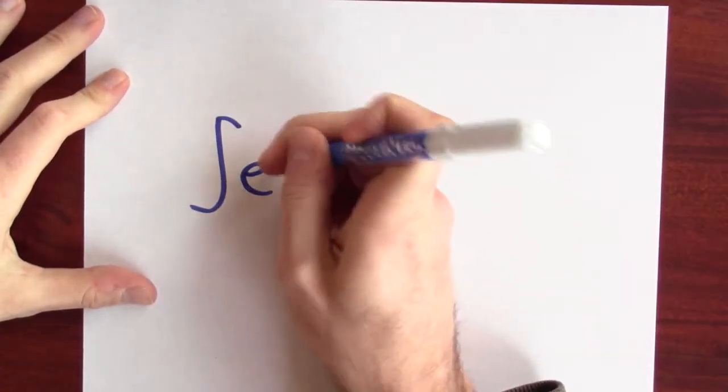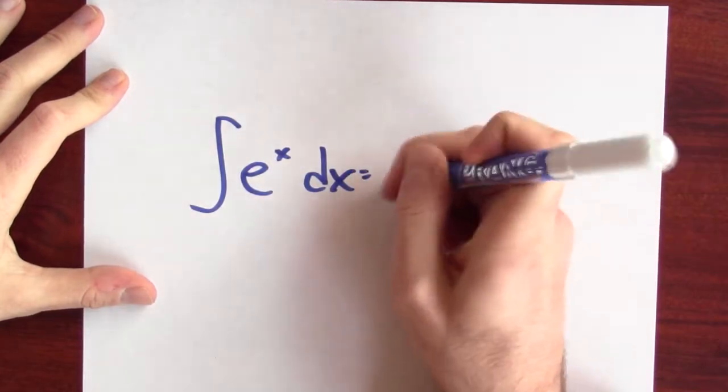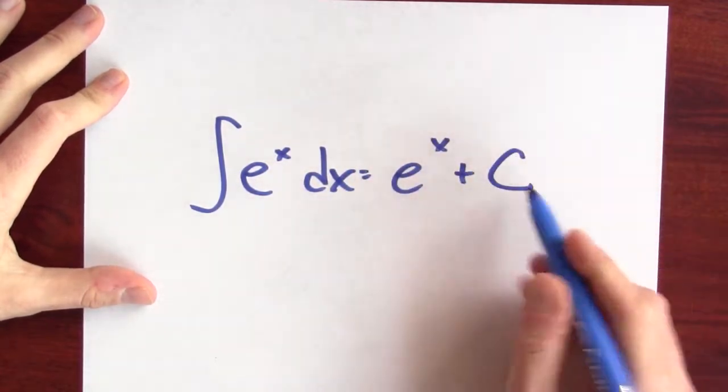The most general anti-derivative of e to the x is just e to the x plus some constant c. How do I know that?